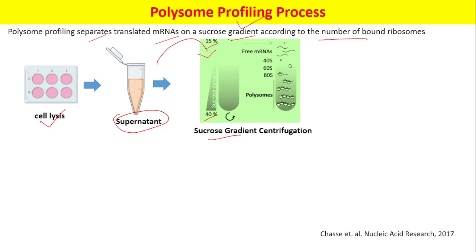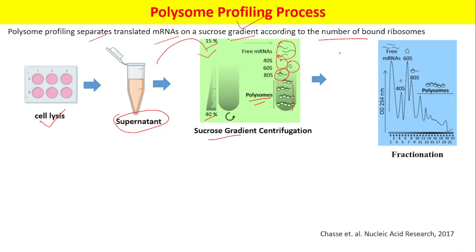In the sucrose gradient, different fractions can be visualized. As you can see here, we have free mRNA molecules, 40S ribosomes, 60S ribosomes, 80S ribosome-associated mRNA or monosome, and polysomes at the bottom. We can fractionate each of these using a flow cell and spectrophotometer, giving us the free mRNA fraction, 40S, 60S, monosome, and polysome fractions.